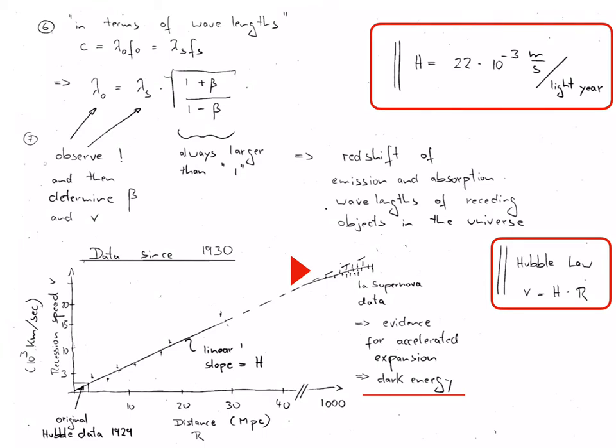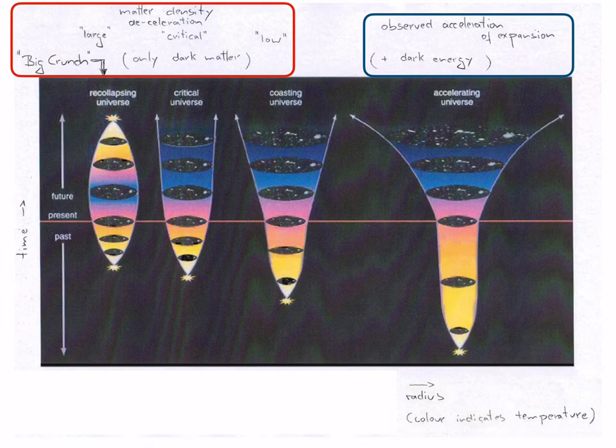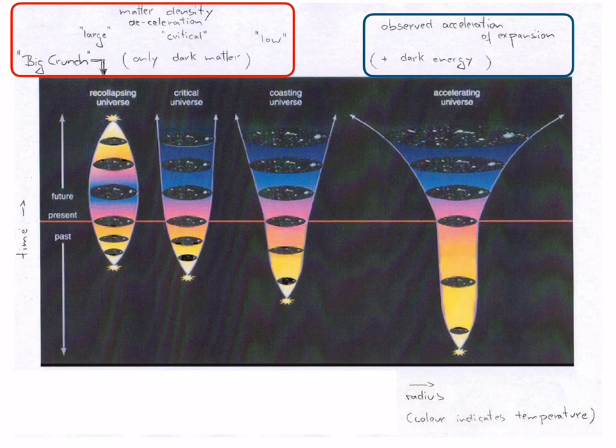This is an exciting observation which may be explained if a new type of matter is assumed to exist, which we don't yet understand. It's referred to as dark energy, and it has gravitational properties. However, the gravitational force is not attractive, but repulsive.